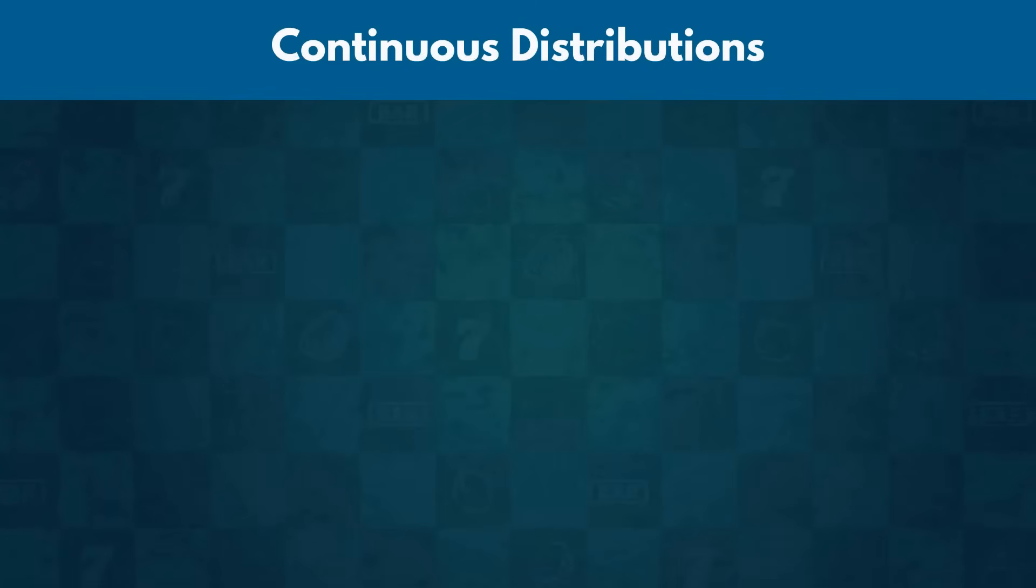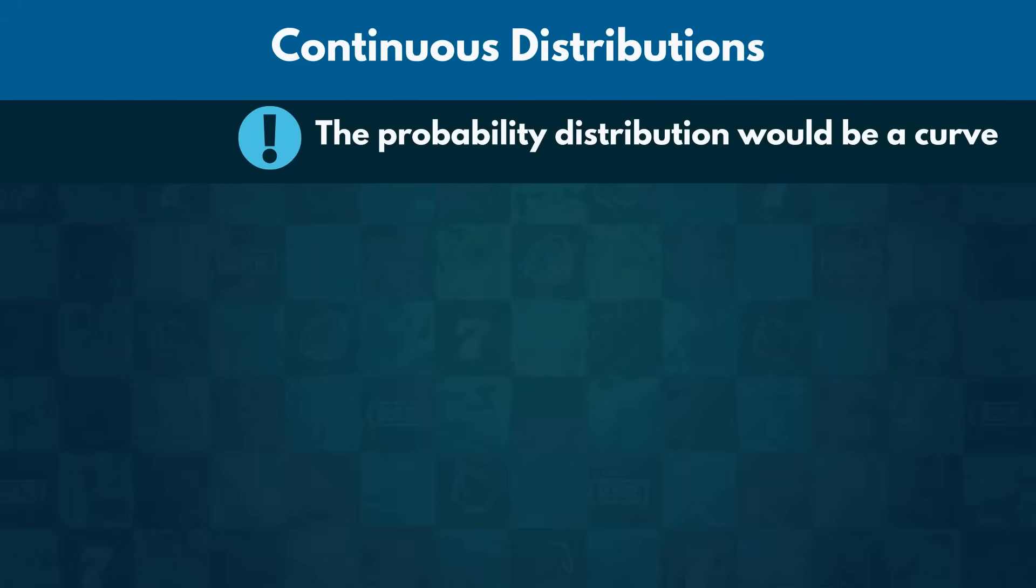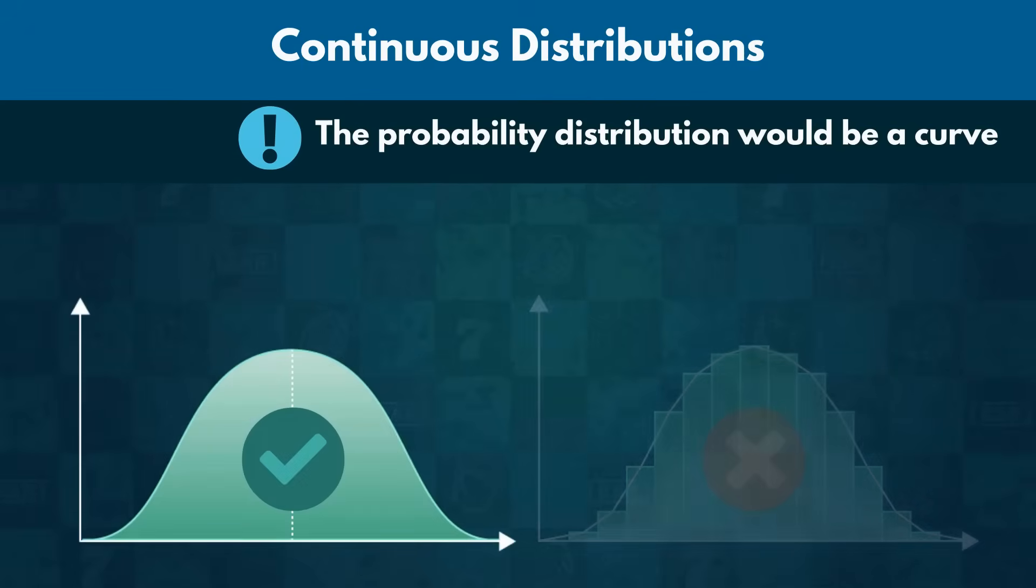Great. Now, on to the continuous distributions. One thing to remember is that since we are dealing with continuous outcomes, the probability distribution would be a curve as opposed to unconnected individual bars.